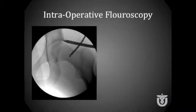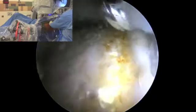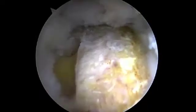Intraoperative fluoroscopy can be used to help identify the CAM lesion and the amount of resection needed to restore adequate offset. With the extremity in extension and slight internal rotation, the trough is begun at the superior location of the CAM lesion. I typically step off the defined edge of the CAM lesion by 8–10 mm using the width of the burr as a guide. I find it important to continuously visualize the edge of the head-neck junction so that the trough can be placed parallel to the defined edge.